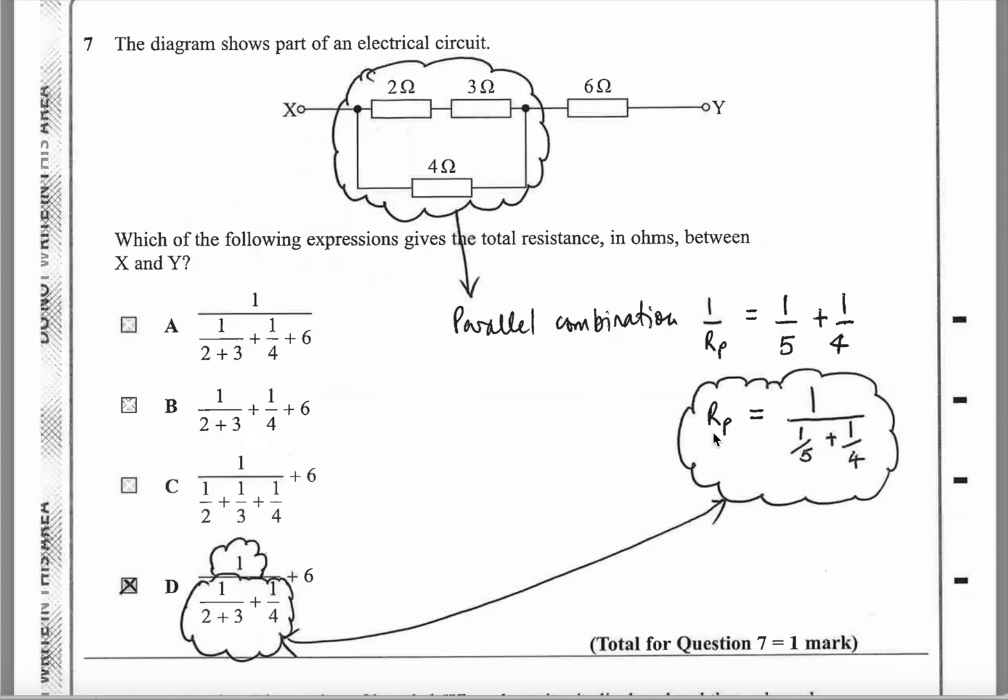1 over the total resistance of the parallel combination, which I'm calling 1 over RP, must be equal to 1 over 5, because these two add up to 5, plus 1 over 4. If you simplify that, you will find that RP is going to be 1 over that. So you want the reciprocal of this, which is 1 over these fractions. Then you've got to add the 6 afterwards. So 6 is separate to this value. The only one that looks like that - there's 2 plus 3, that's 1 over 5, plus the 1 quarter underneath. Then it's 1 over it. That's the resistors in parallel combination. And then you add the 6 ohms outside. So the answer is D.